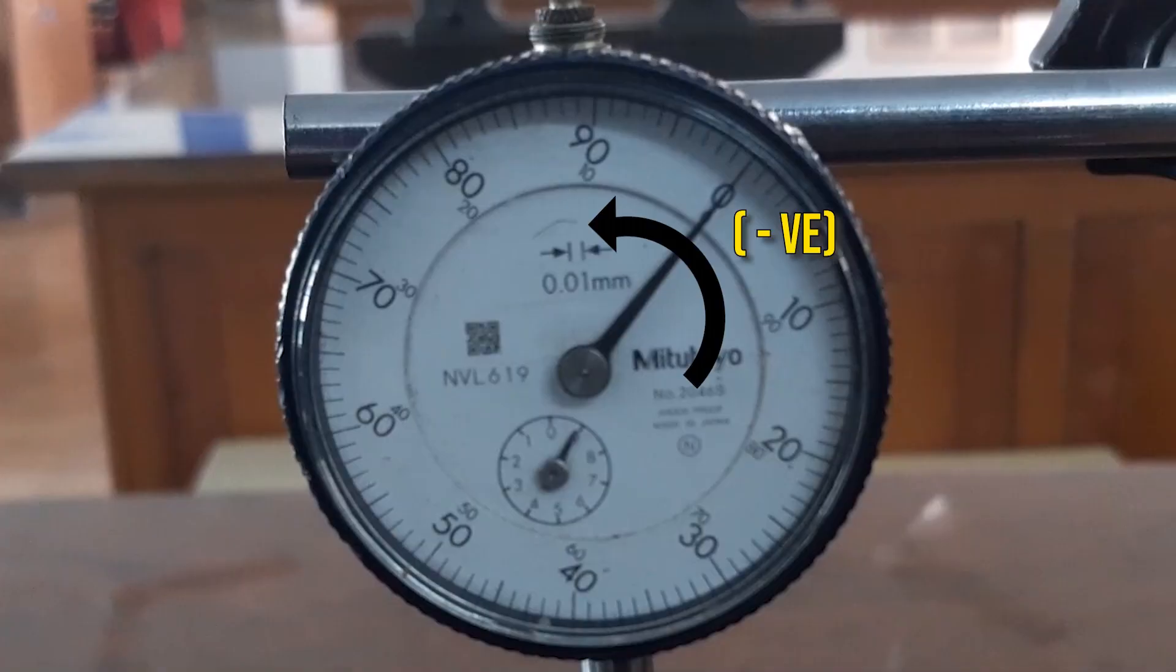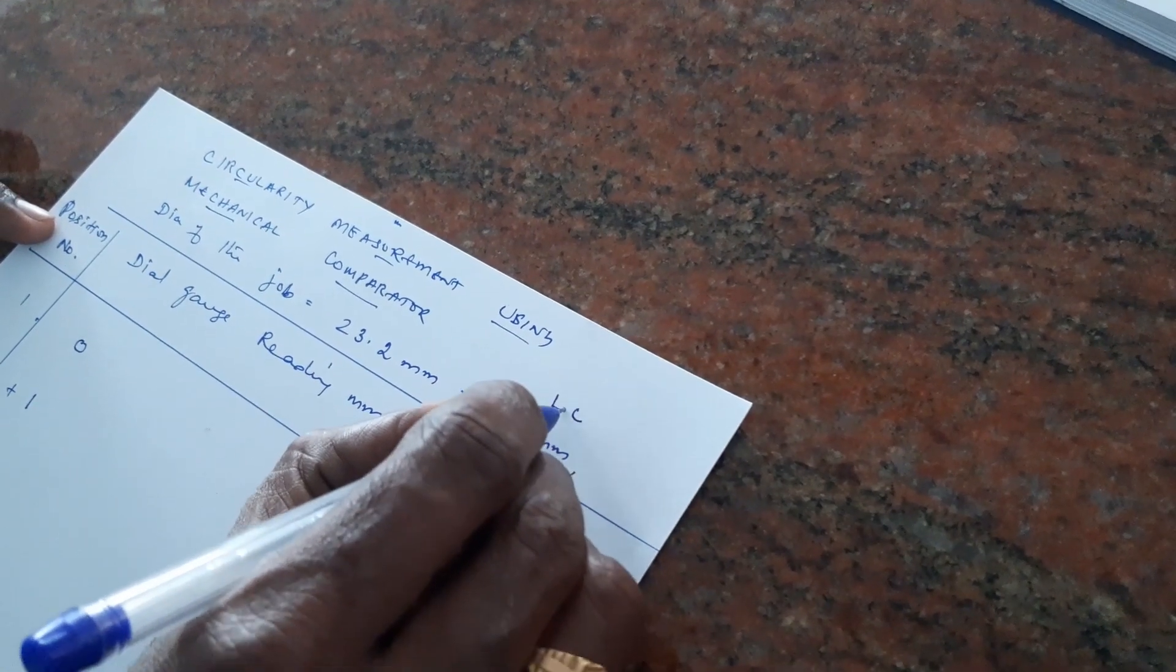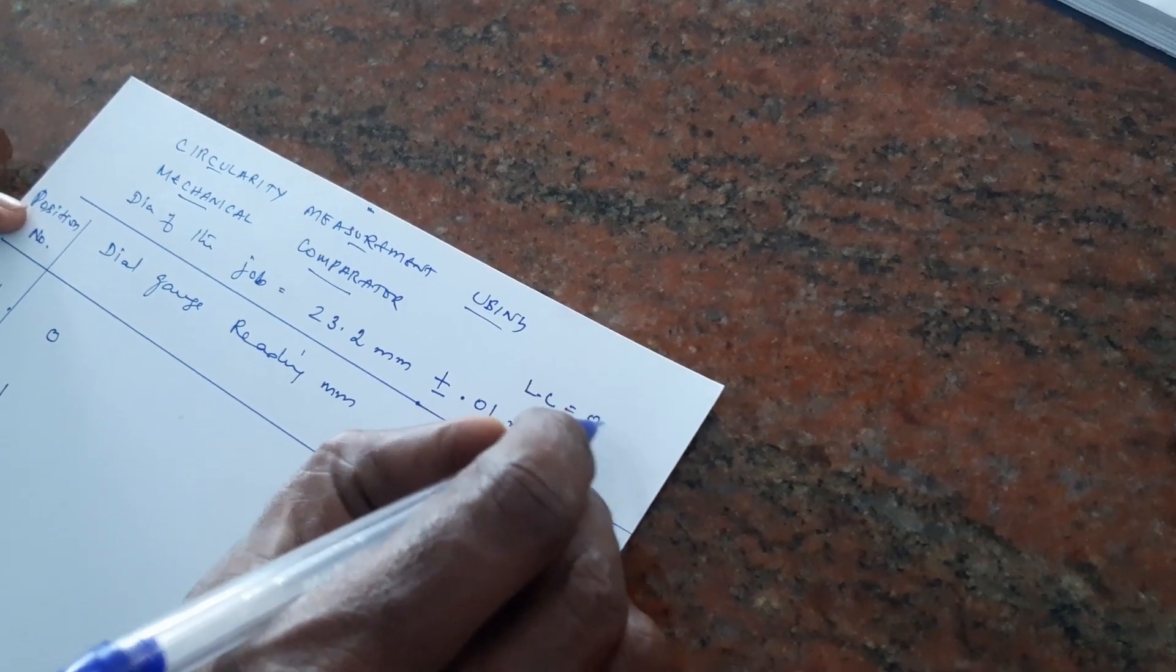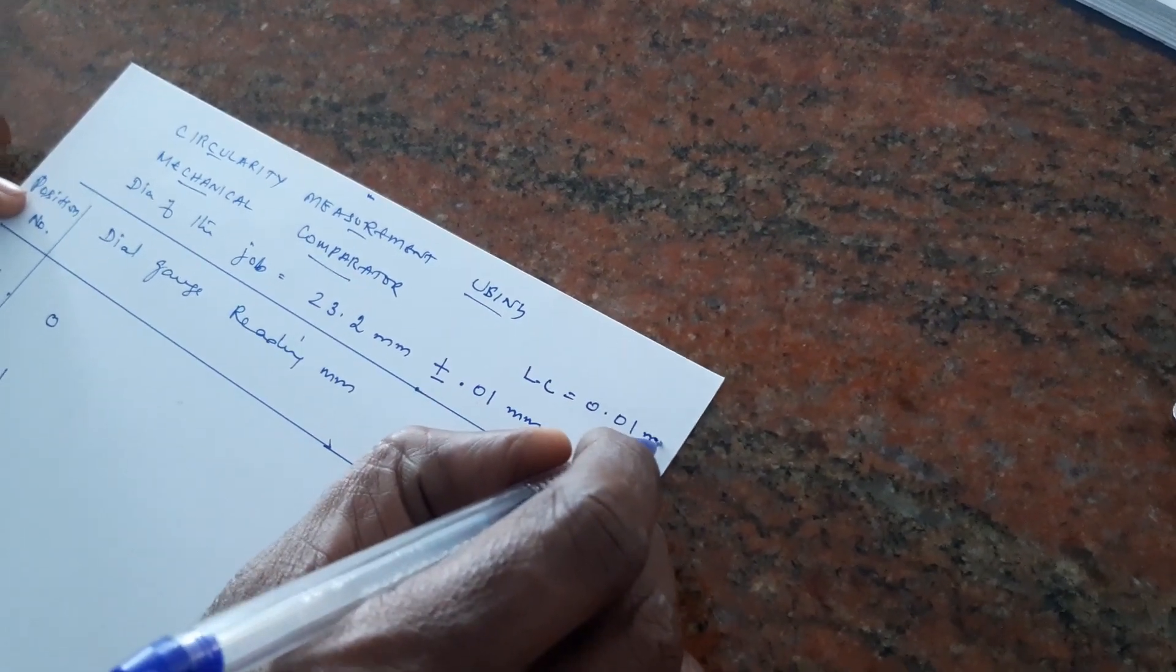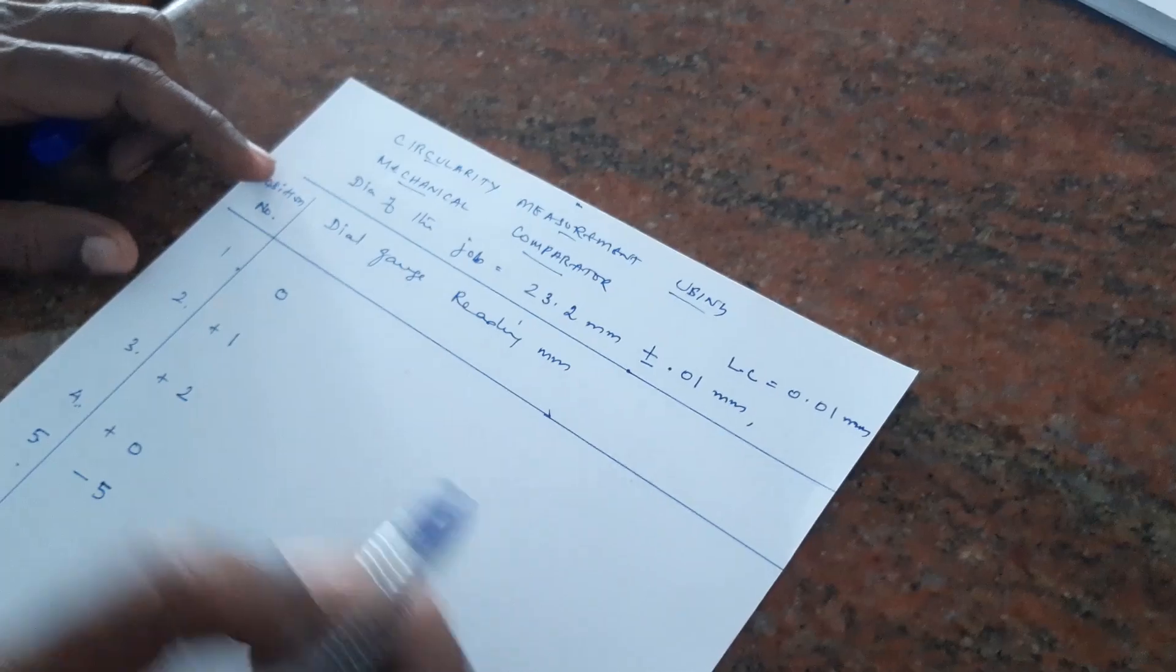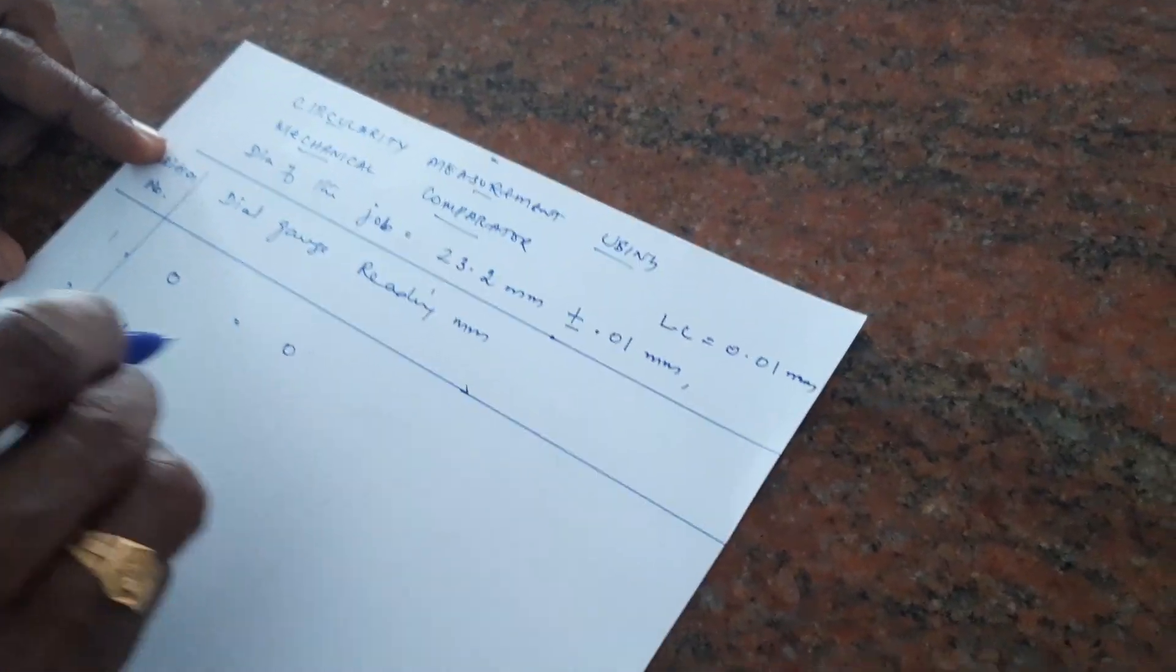If the points move counterclockwise, then the value should be noted down as negative, positive if it's in clockwise direction. Since the least count is 0.01 millimeters, we have to convert the value taken from the dial indicator.